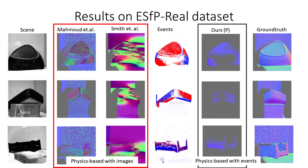We show similar performance on the real dataset. A real event camera introduces several non-idealities, one of them being the contrast sensitivity. With a typical event camera, the contrast sensitivity cannot usually be set lower than 30%, resulting in the inability to capture small intensity changes, especially present in front-parallel surfaces.